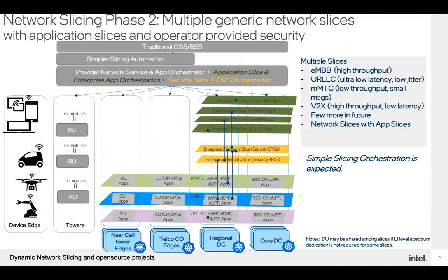In phase two, our belief is that there would be multiple slices, but they're all static or generic slices. We've talked about eMBB traffic which requires high throughput. Industry 4.0 segments require ultra-reliable low-latency communication, so there's a need for another slice there. In the case of massive IoT devices, they require mMTC kind of traffic profile — low throughput, small messages, but very high message count. The next phase of slicing would be simpler, fixed-number slices provided by providers, requiring only simple slicing orchestration.